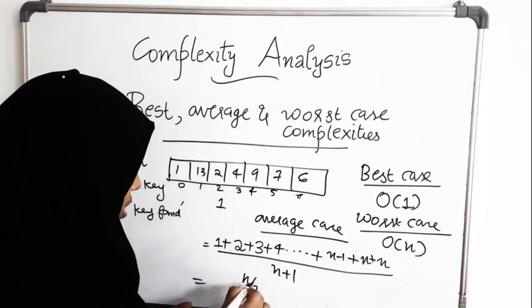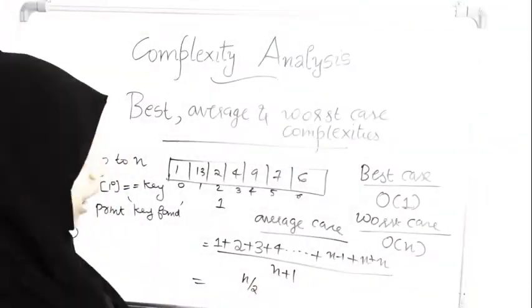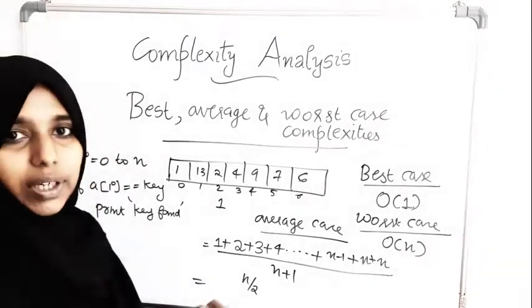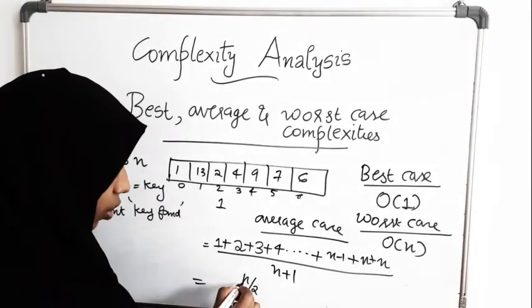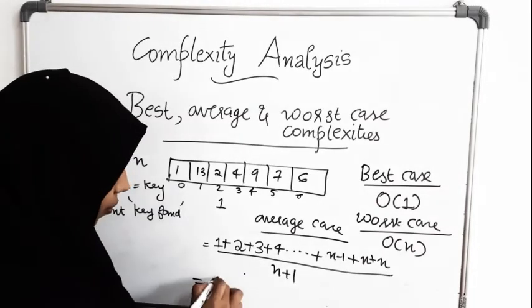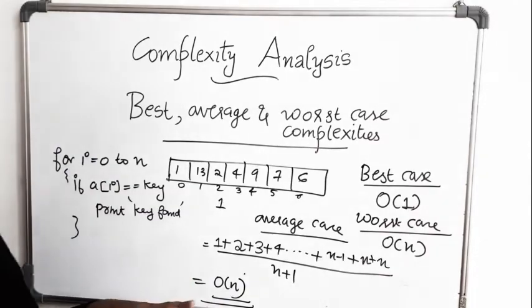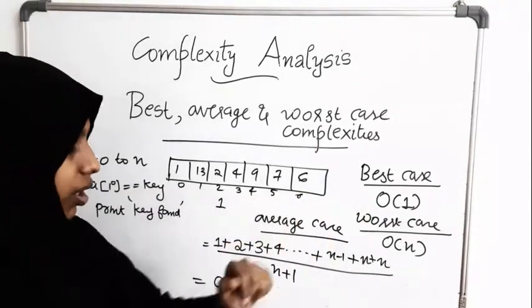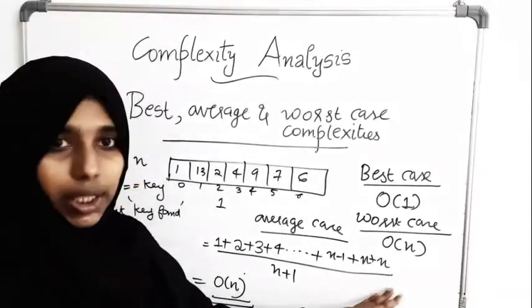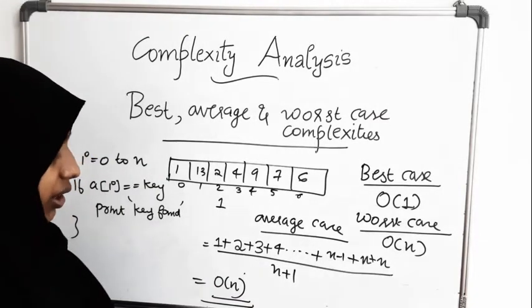When you divide that sum by n+1 cases, you get something close to n/2. As mentioned in the previous video, when taking complexity we use the highest power of n without coefficients, so the 1/2 coefficient is dropped. The average case complexity is therefore O(n). So for linear search: best case is O(1), average case is O(n), and worst case is O(n).